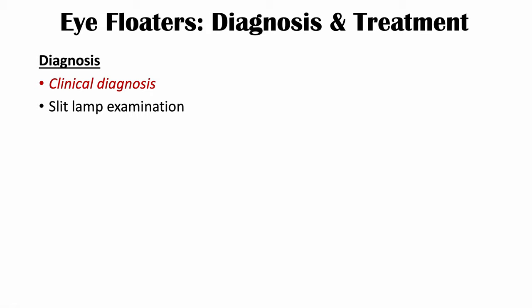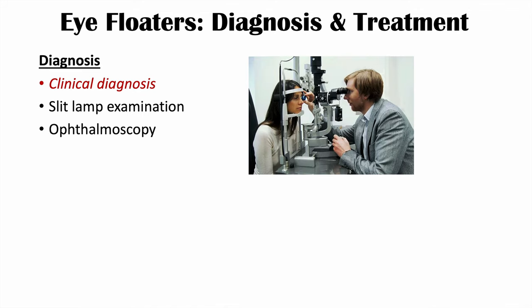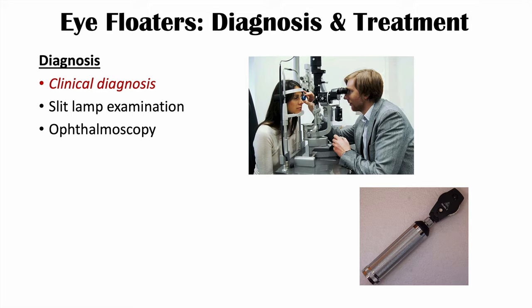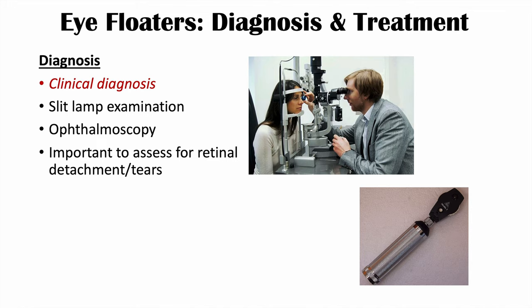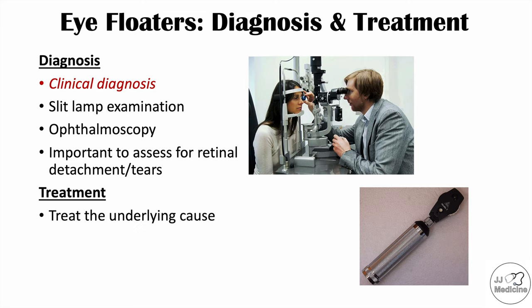Eye floaters are evaluated as a clinical feature of other conditions. If a patient reports seeing floaters, that is often sufficient to diagnose eye floaters, but slit lamp examination is also important to assess for other ophthalmological conditions. Ophthalmoscopy is also important to perform. These examinations help a clinician rule out retinal tear or retinal detachment. If any underlying conditions are found to be causing the floaters, such as retinal detachment or tears, it's important to treat those underlying causes.